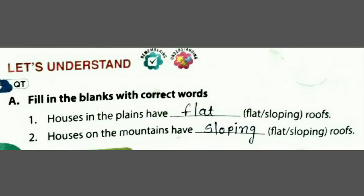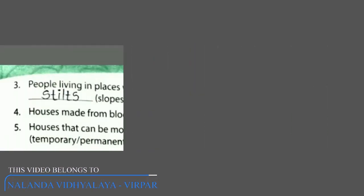Second: houses on the mountains have ___ roof. Mountains में जो house होते हैं उसके रूफ sloping होते हैं. So answer will be sloping. क्योंकि जहां mountain area होता है वहां ज्यादा बर्फ — snow गिरता है, तो sloping roof से वो easily नीचे गिर जाता है.